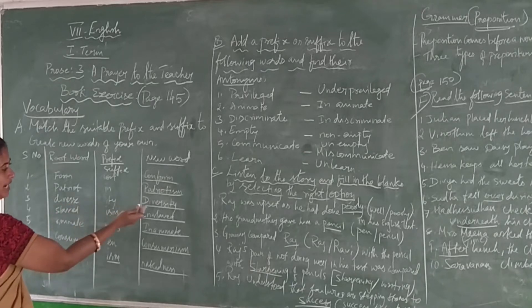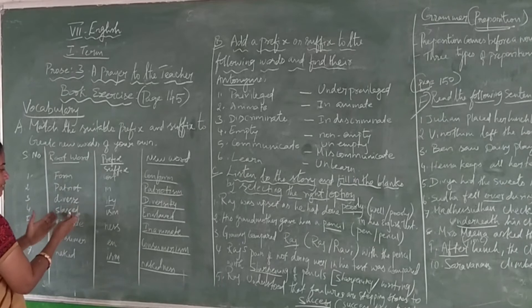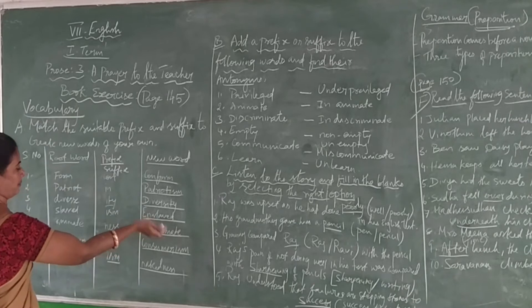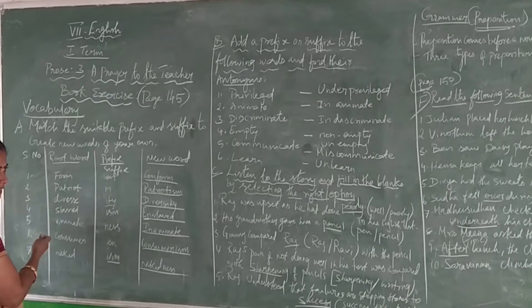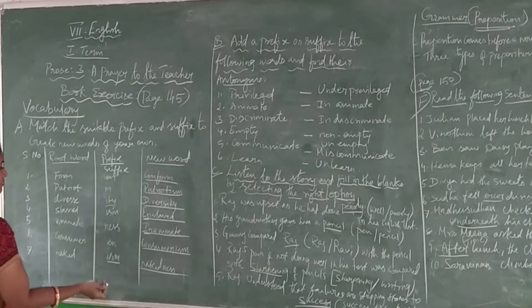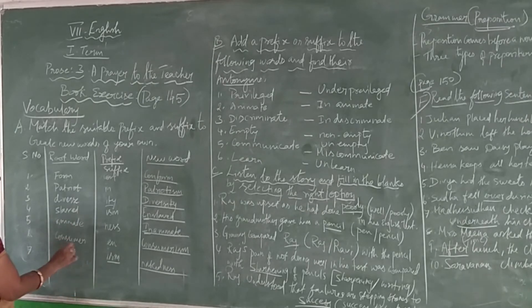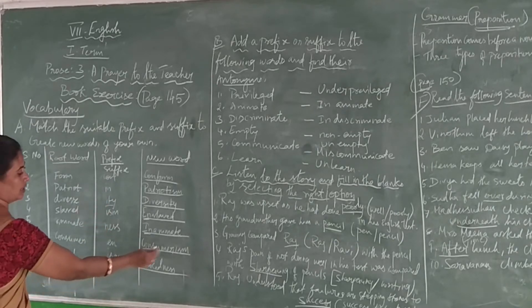Next is 'divorce' - you have to write 'diversity'. 'Scraved' you have to write as 'enslave', the prefix word. 'Animate' - whether you have to add prefix or suffix - 'unanimate' is the prefix word. Next 'consumable' - you have to write the suffix word 'consumerism'.